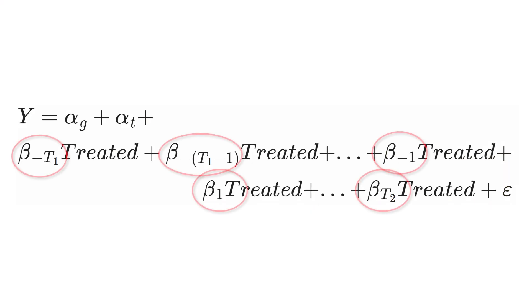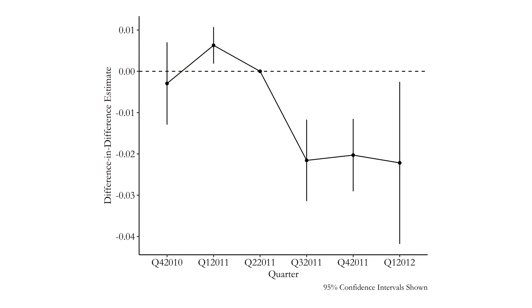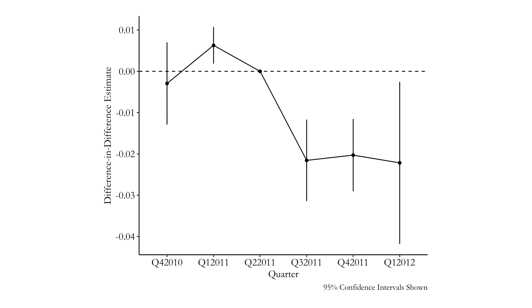When I estimate this I get a set of beta coefficients, each interpreted just like a coefficient from a regular two-way fixed effects DiD model. The beta negative-one coefficient is the effect of treatment in the last period before treatment occurred; beta one is the effect in the first period after. You can graph these coefficients to see how the effect changes over time. This takes us back to the Kessler and Roth organ donation study, where California changed how it asked people to become organ donors in 2011, and we look at the effect on organ donation rates.